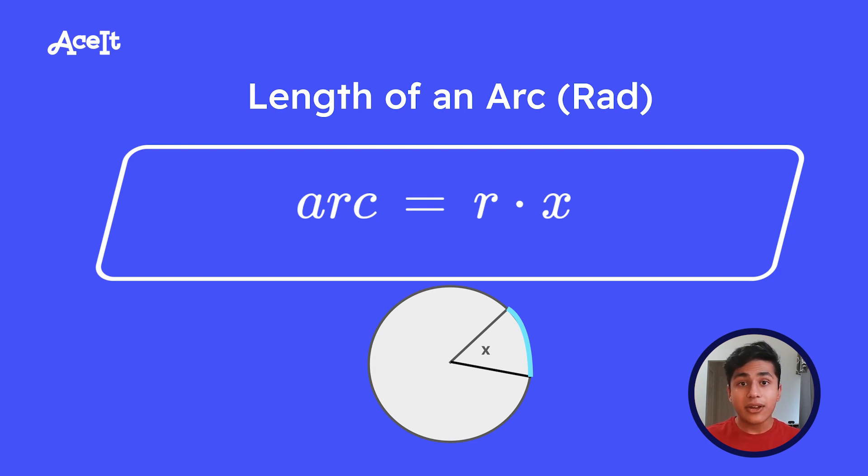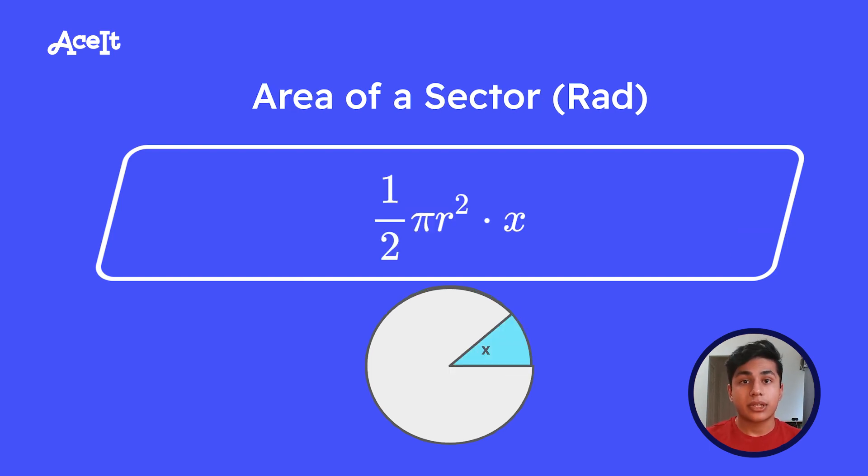One radian is an angle whose corresponding arc length is as long as the radius of the circle. This means that the length of any arc in the circle is going to be x in radians times the radius. Similarly, the area of a circle equation is going to be slightly manipulated to achieve the area of a sector equation. When you're working in radians, the area of a sector is going to be 1/2 πr² times the angle.